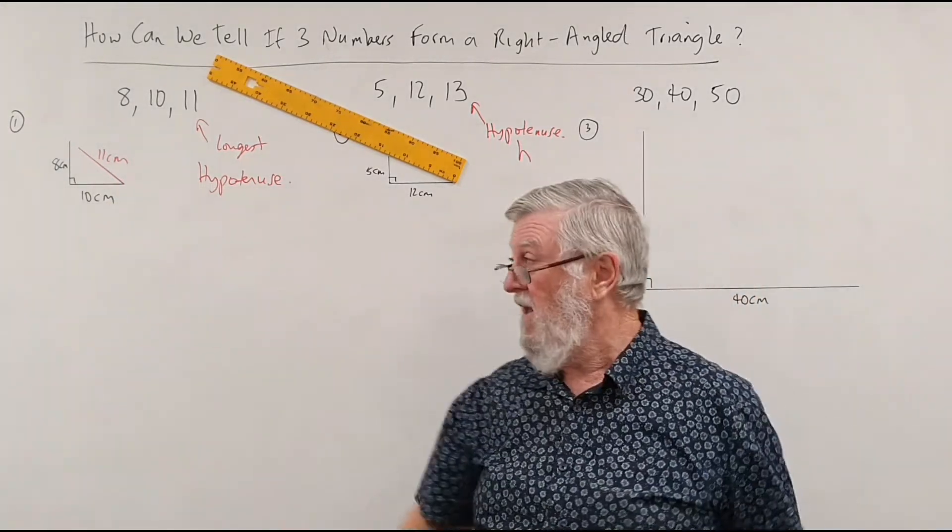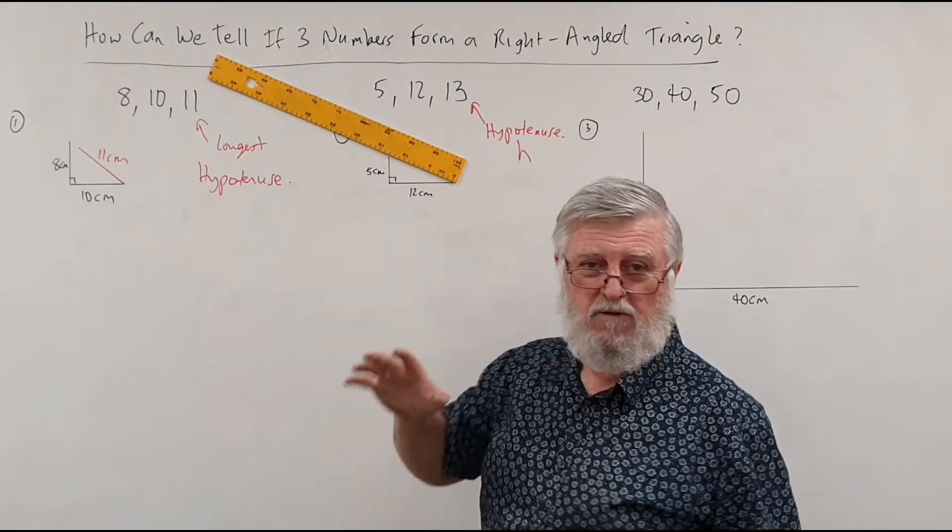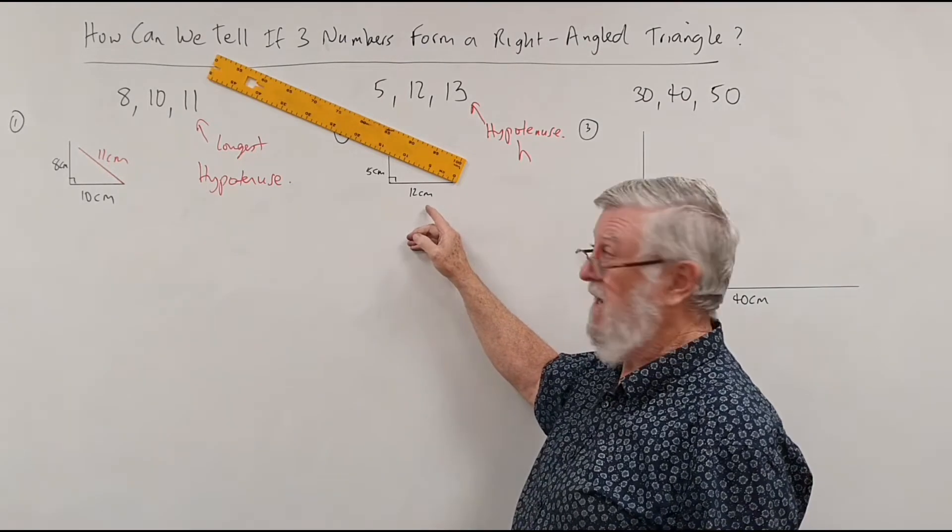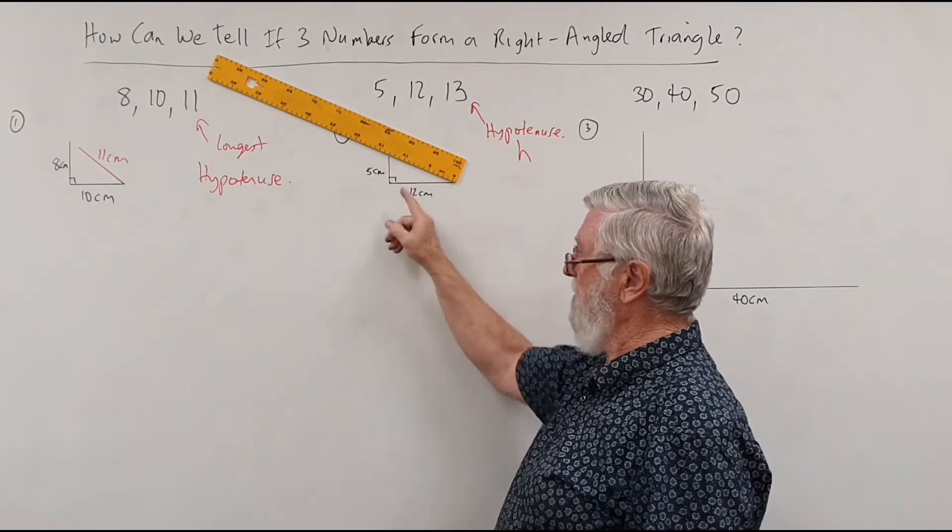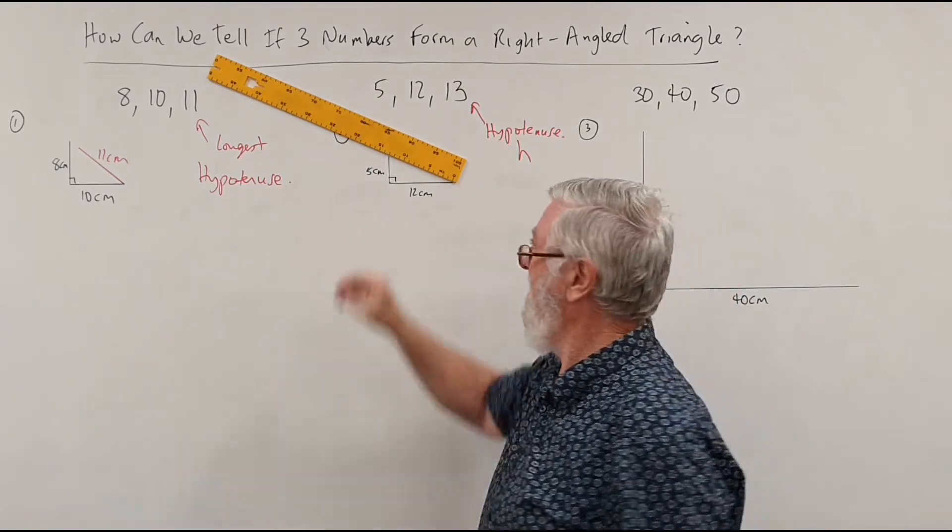So if I was out in the real world, and I needed to get a right angle, and I say it was on a field, I could use 5 metres and 12 metres, and then make sure it's 13 across, and they will know that that angle is a right angle, and we use right angles everywhere. One more.